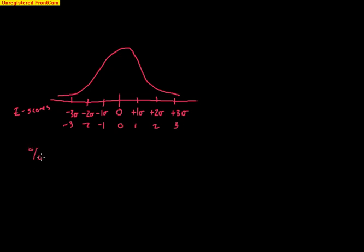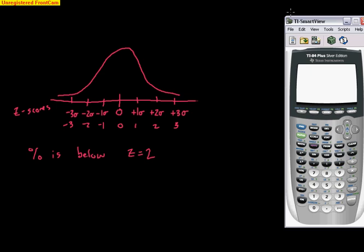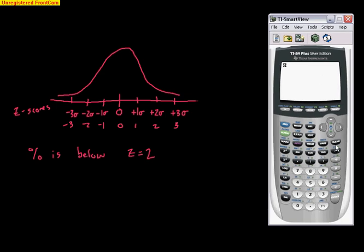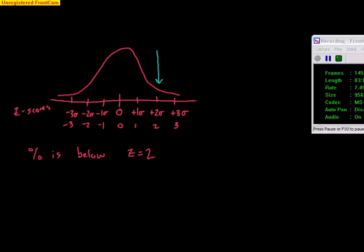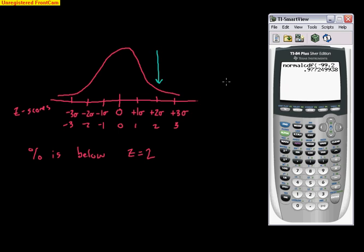So if I said to you, what percent of data is below a z-score of two? Well, that's where normal CDF comes in handy, right? So we're going to go to our normal CDF here, and we're going to go, okay, he said below, so negative 99, comma, two. So that means that below z-score of two, right? Let's take a look at that on the graph. Here's two right here, there's the z-score of two. So what percent of data is below two? There should be a lot of data below two. And in fact, our calculator tells us that it's almost 98% of data is below two.